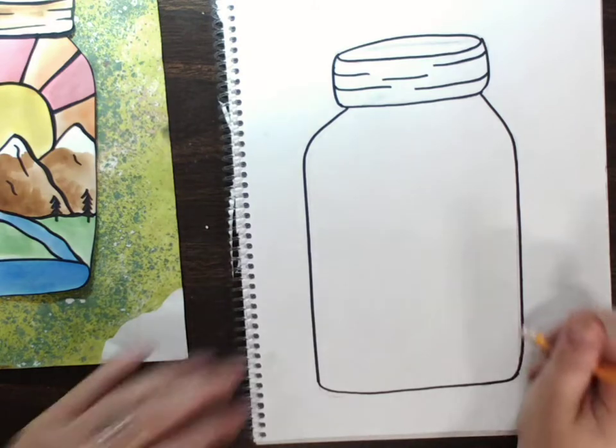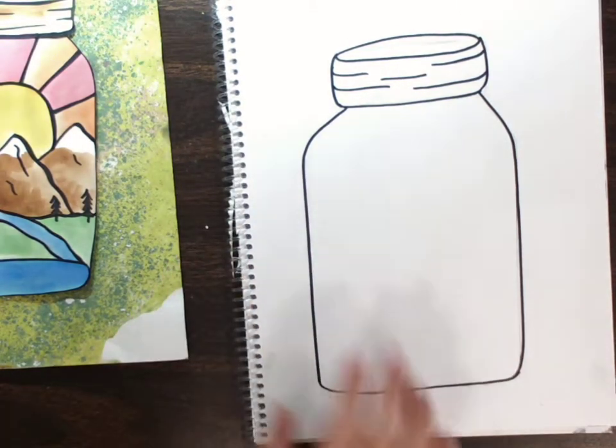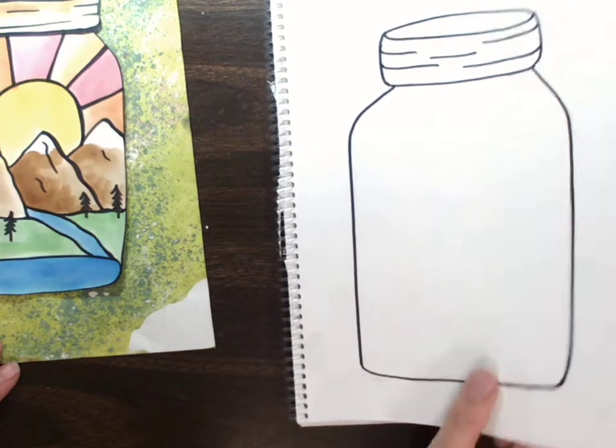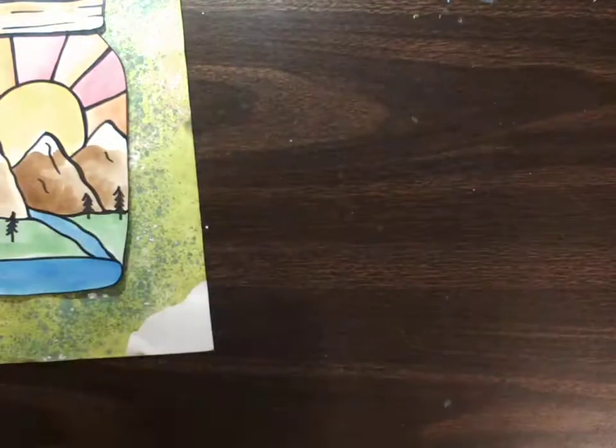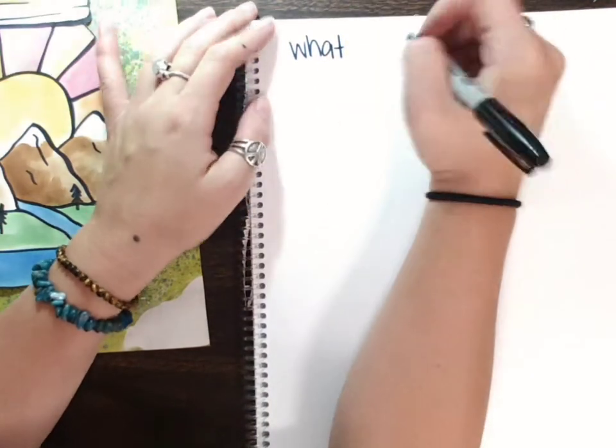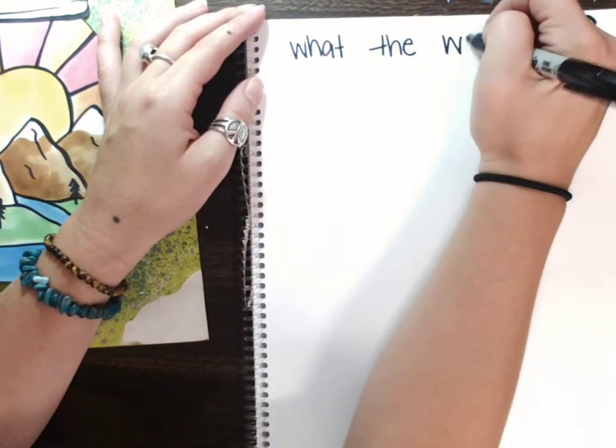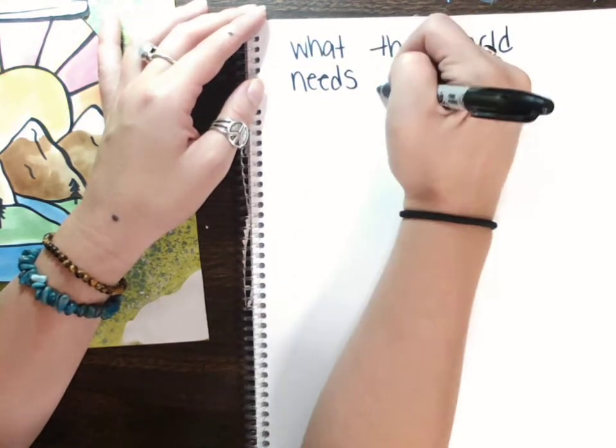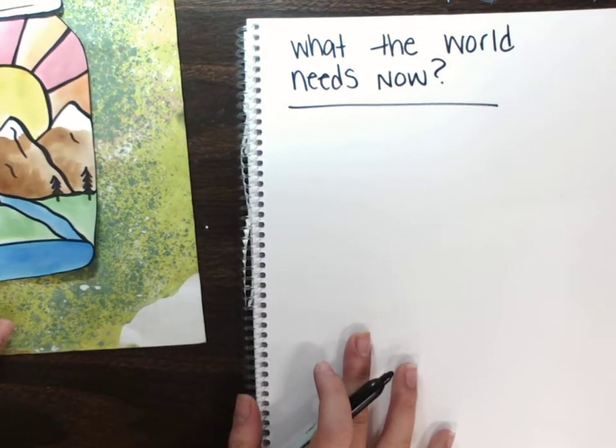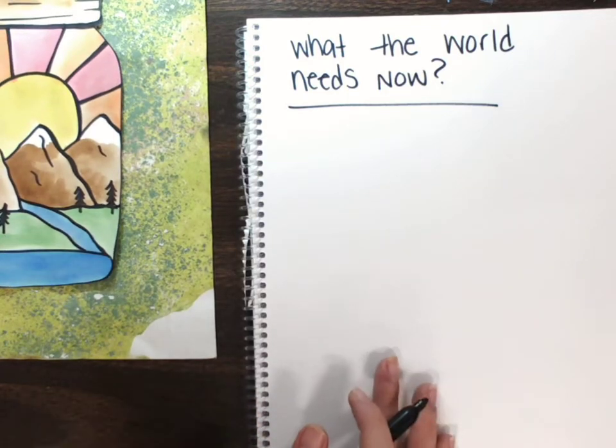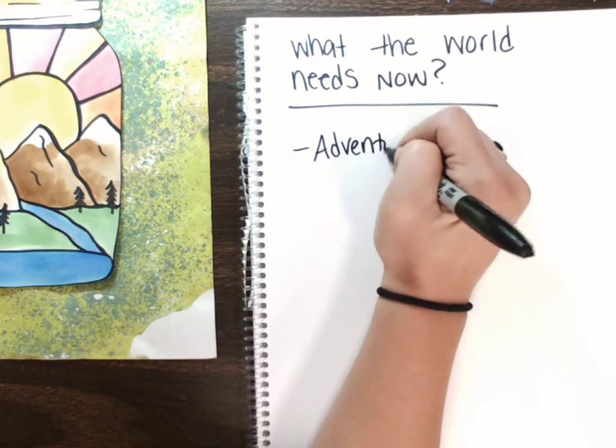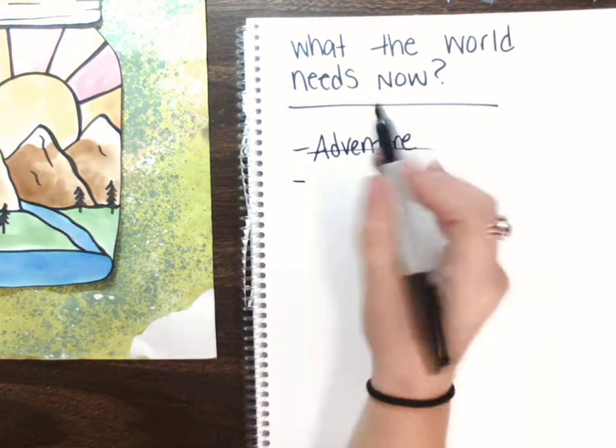Now that it's all done we're going to stop here for the drawing part of our lesson. And we're going to go ahead and start thinking about words that we want to use to describe what's in our jar. So I'm going to turn the page and I'm going to come back to this. And I'm going to write and start to think about just words. So you can title this What the World Needs Now. So we're thinking about what does the world need now? And think about it maybe in your world or in others or in total everybody. Like what do we need? So I already wrote Adventure. So I'm going to think about what else I think the world needs.